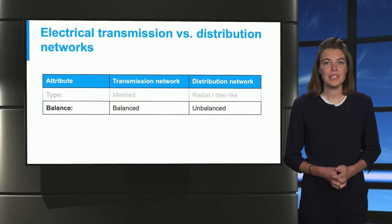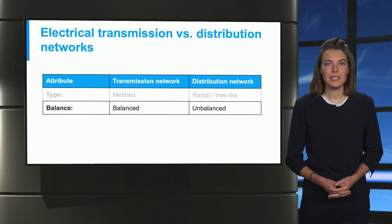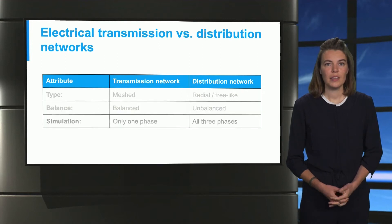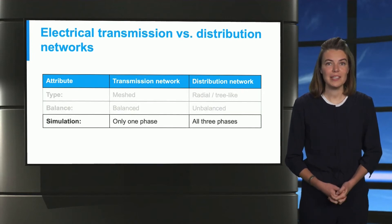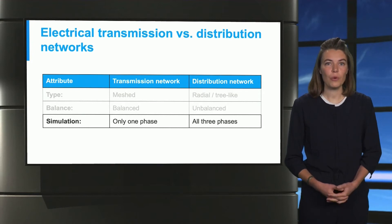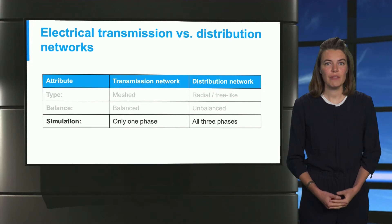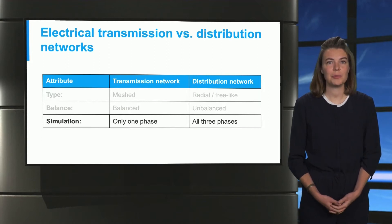Both transmission and distribution networks have three phases, but in the transmission network they are balanced and in the distribution network they are unbalanced. The consequence is that for a transmission network it is sufficient to simulate only one phase, because all phases are in balance and the other phases will simply be a phase shift of the simulated phase. Due to its unbalanced nature, you have to compute all three phases separately in a distribution network.